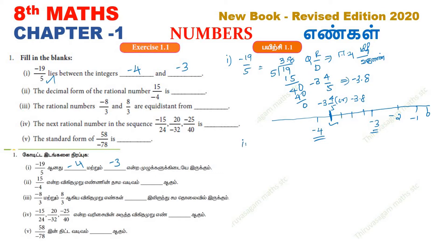Second sub-question: minus 15 by 4. We find the decimal form of this number. So, minus 15 by 4 — what do we do? We use the decimal formula and divide the values.